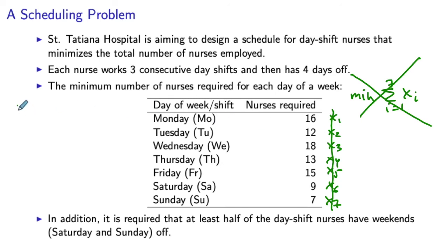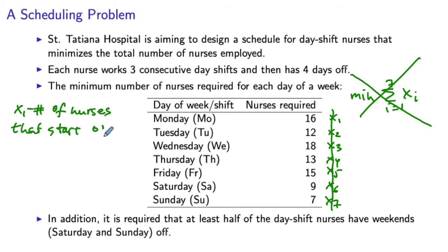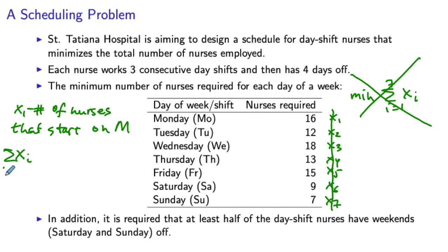So as x1, we define the number of nurses that start on Monday. Similarly, x2 would be the number of nurses that start on Tuesday, and so on. Then we don't have the overlap issue, and the total number of nurses that we need to hire will be given by the summation of xi's for i between 1 and 7, and this is what we want to minimize.